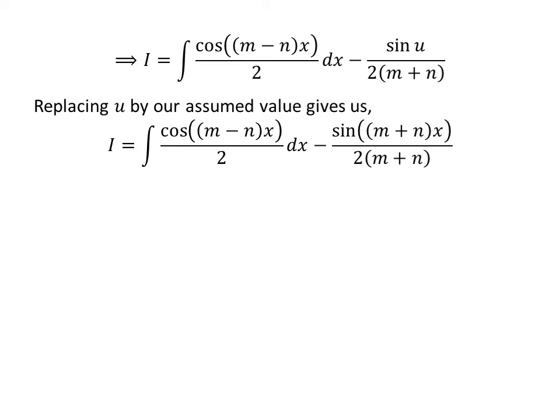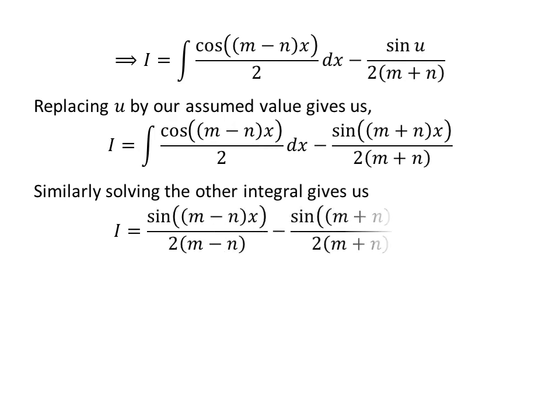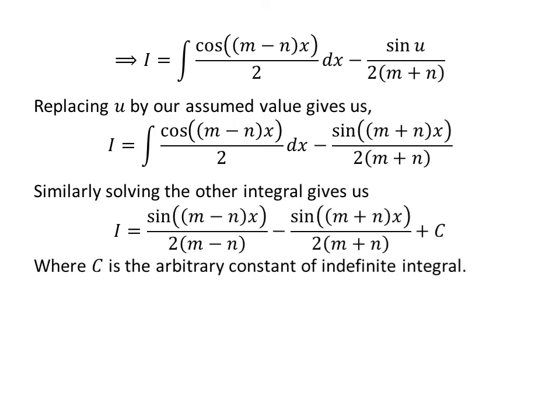Now, let us substitute u back by its assumed value. So, I is equal to the integral of cos((m − n)x) upon 2 with respect to x, minus sin((m + n)x) upon 2(m + n). Similarly, solving the remaining integral gives us the final answer: I equals sin((m − n)x) upon 2(m − n) minus sin((m + n)x) upon 2(m + n), plus C.